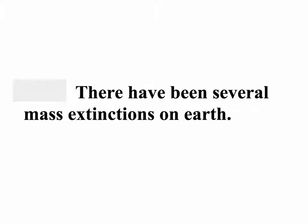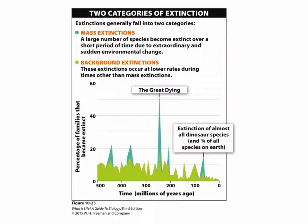Let's talk a little more about mass extinctions. There have been five mass extinctions in Earth's history, and it's argued that we are currently going through a sixth. There are two types of extinctions: mass extinctions, when a large number of species become extinct over a short period of time due to extraordinary and sudden environmental changes, and background extinctions.